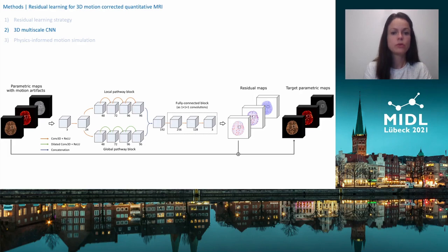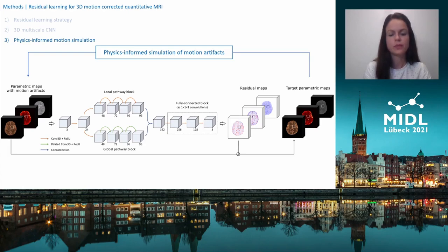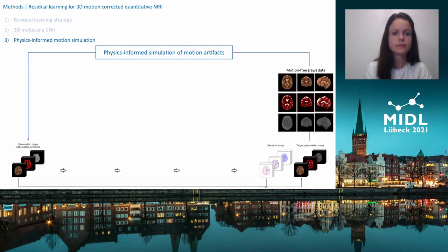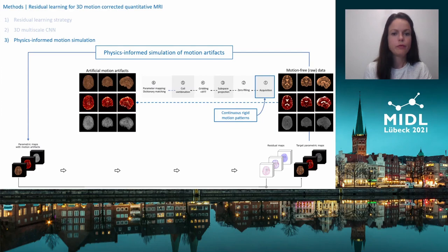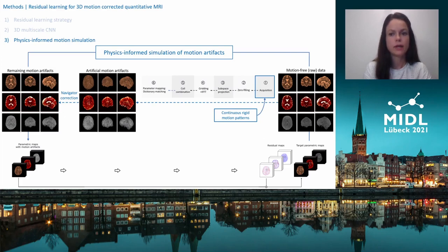To overcome the usual bottleneck for supervised learning approaches — the requirement for paired training datasets — we propose a physics-informed simulation to generate motion-corrupted parameter maps from motion-free raw data. To imitate real head movements, we retrospectively apply continuous rigid motion patterns — translations and rotations — to the individual timeframes of the raw k-t space, then propagate these through our imaging pipeline. Before feeding the corrupted parameter maps into the CNN, we perform navigator-based correction to mitigate coarser artifacts in the first place.